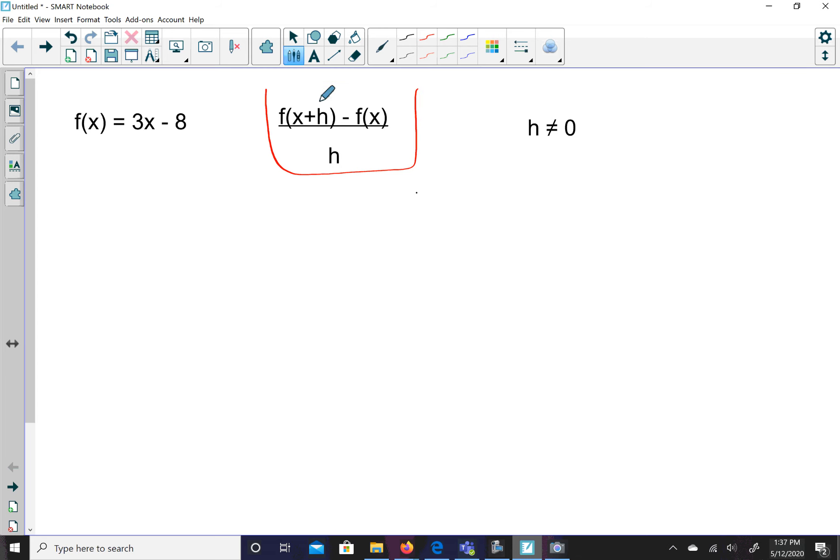So what I'm going to do is I'm going to put x plus h in every place I see an x. So I'm going to have 3 in place of x. I'm going to write x plus h minus 8. That's this f of x plus h. And then I'm going to have this minus sign. Let's make that, so many color choices. Minus.